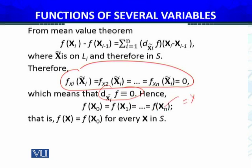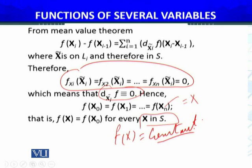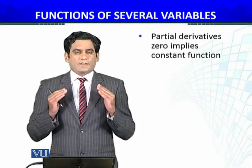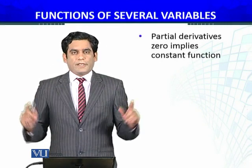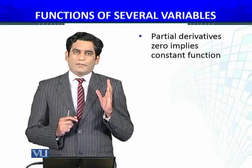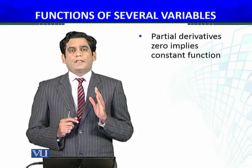So this is only possible that my function f(x) is a constant function, jo ke maine sabit karna tha. So agar partial derivatives, kisi function of several variables ke partial derivatives agar zero hai over the complete domain, domain ka har point pe partial derivative zero hai, then the function must be constant.